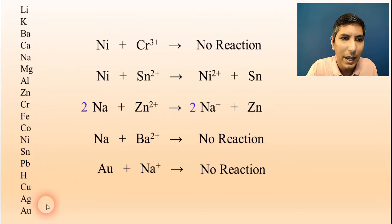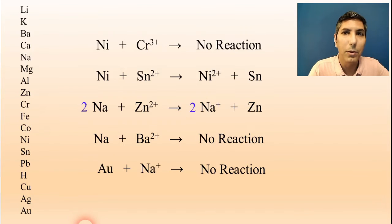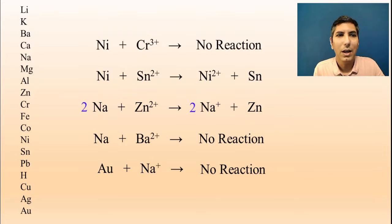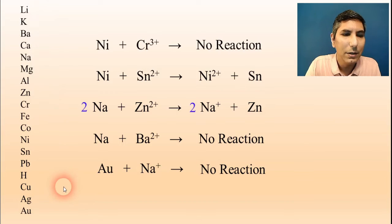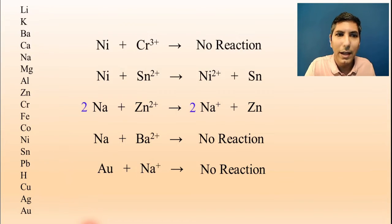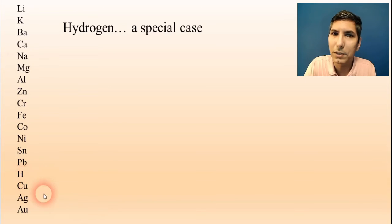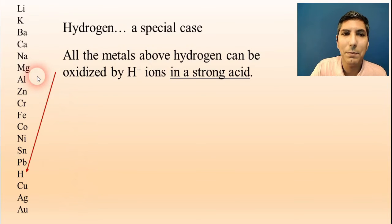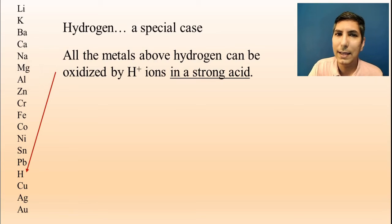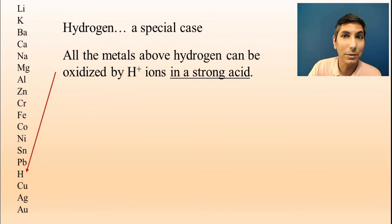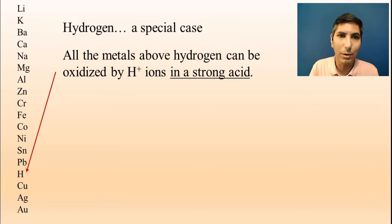You can use the activity series to determine whether a reaction will take place. On the AP Chemistry exam, you're generally not going to see a no-reaction scenario — they'll give you processes that react. You don't have to memorize the activity series, but you need to understand how to work with it. Remember that hydrogen is a special case: all metals above hydrogen can be oxidized by H+ ions, but only in a strong acid. The six strong acids are hydrochloric, hydrobromic, hydroiodic, nitric, sulfuric, and perchloric acid.